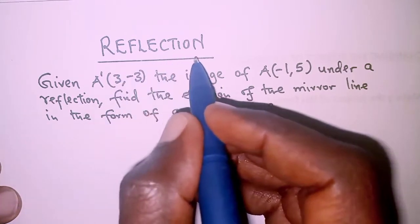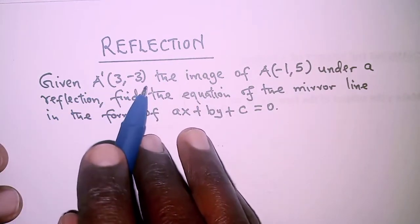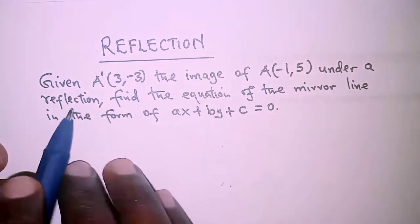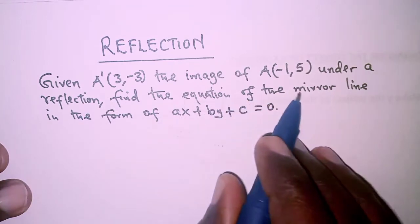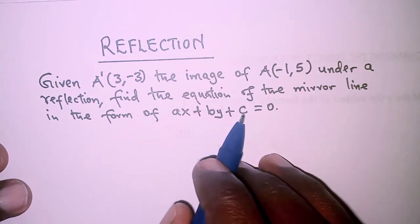The question today is on reflection and it reads: given A'(3,-3) the image of A(-1,5) under a reflection, find the equation of the mirror line in the form ax + by + c = 0.